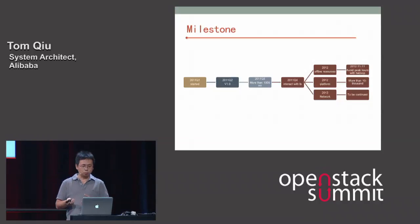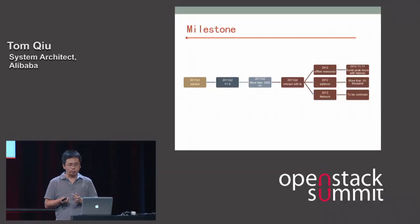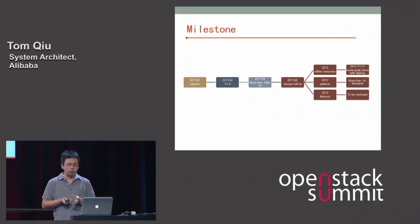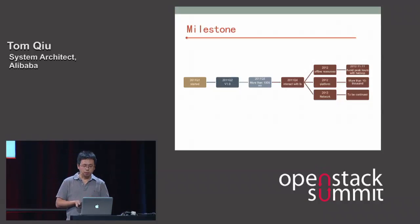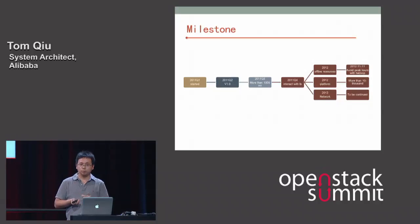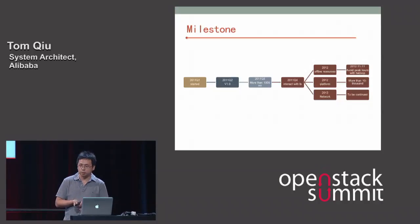Another branch was to build an Infrastructure as a Service platform that can manage a large scale of machines. By 2012, our platform had maintained more than 10,000 service machines. The third branch is for networking, which started in 2013. We want to build a platform to provide Network as a Service.